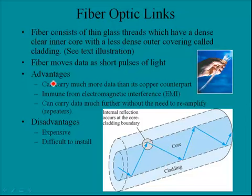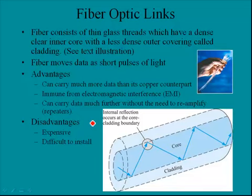The disadvantages of fiber are that it tends to be quite expensive and is rather difficult to handle and install — it is quite delicate. Since it's glass, bending it too severely will break it. If it does break, it requires very high-end, extremely expensive equipment to repair. Copper is relatively simple to repair, whereas fiber is extremely difficult.